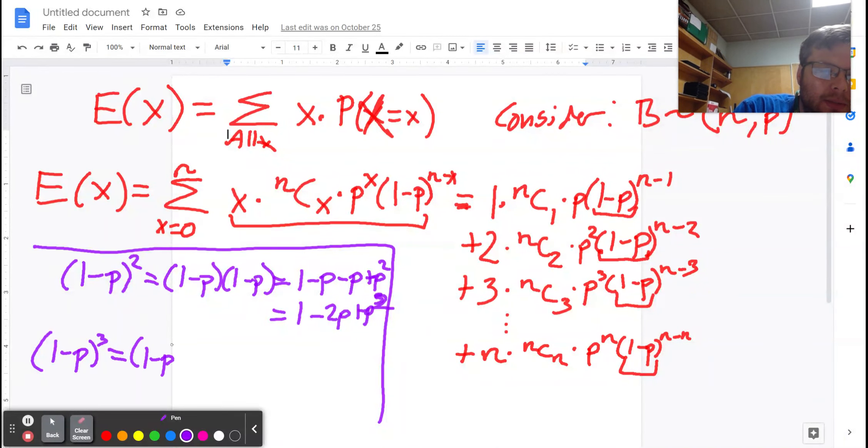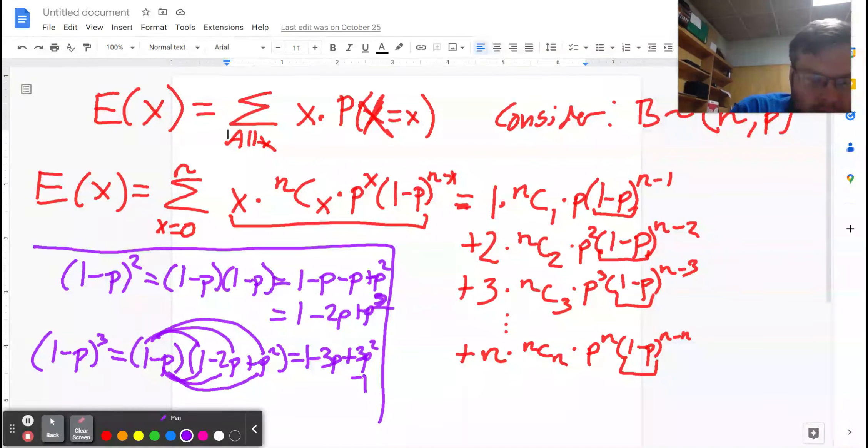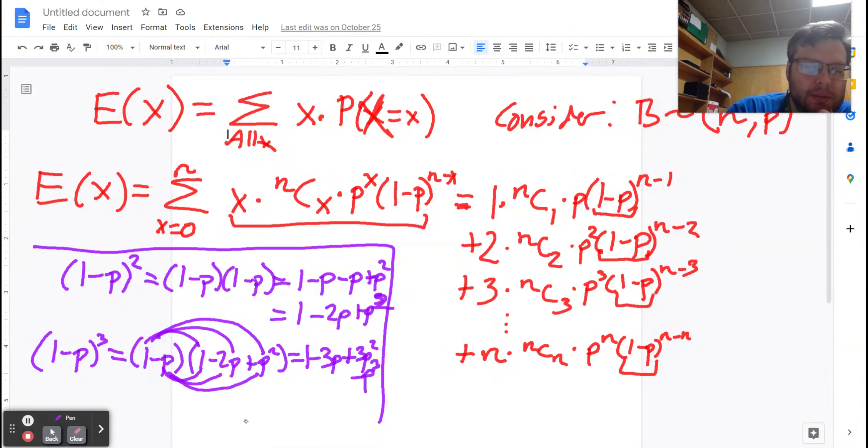If I did one minus p to the third power, it's just another one minus p times the answer we just got. So if I multiply that out, the one makes a copy of everything I just had, and the negative p makes an almost copy. It just makes the power go up one and makes the negatives and positives flip-flop. So we end up with one minus three p plus three p squared minus p cubed. If we keep doing this process over and over again, we are adding on a copy of everything we had and adding on a copy of everything raised to the next negative p.